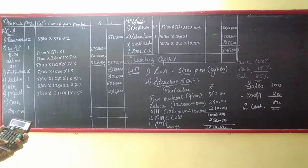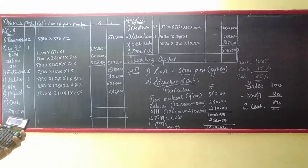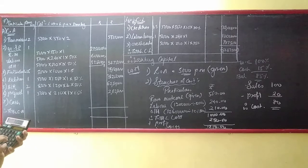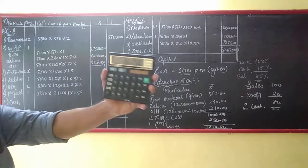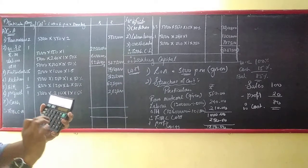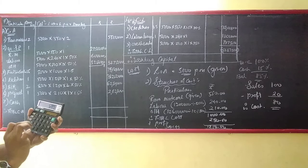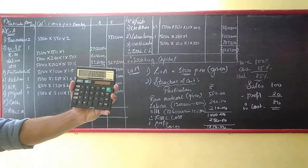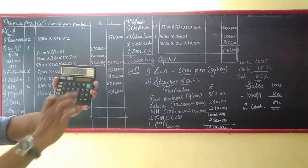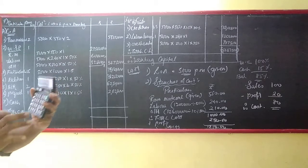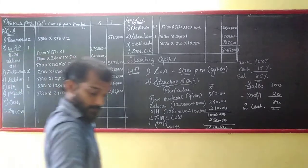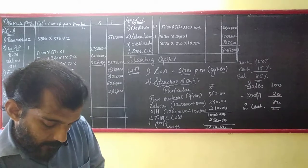Total current assets: ₹55 lakhs + ₹38,75,000 + ₹75 lakhs + ₹31,25,000 + ₹62,50,000 + ₹2,62,500 = ₹2,65,12,500. Minus current liabilities of ₹52,87,500 gives ₹2,12,25,000. Divide by 85% to get net working capital of ₹2,49,70,588.